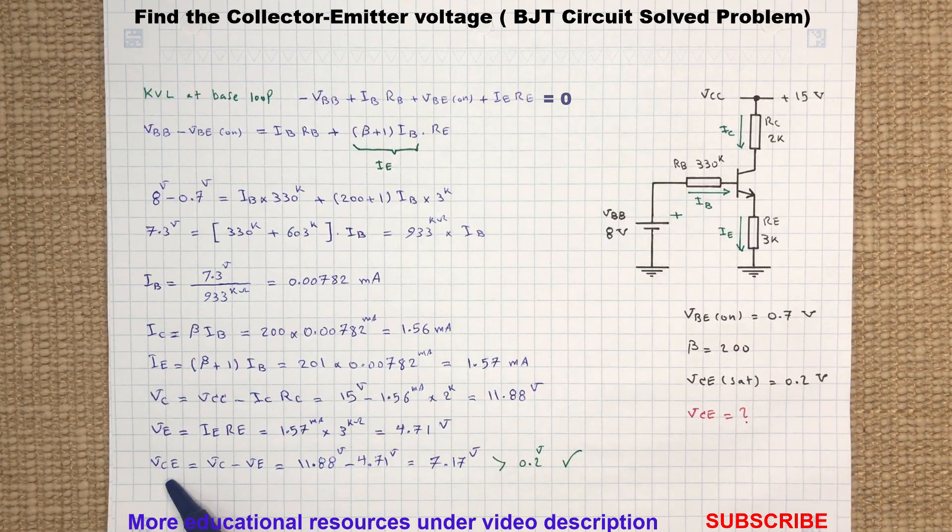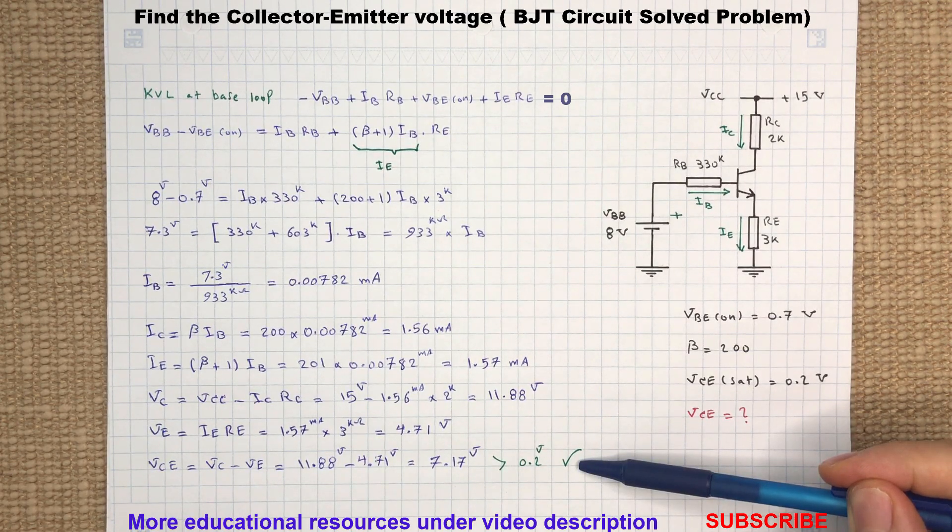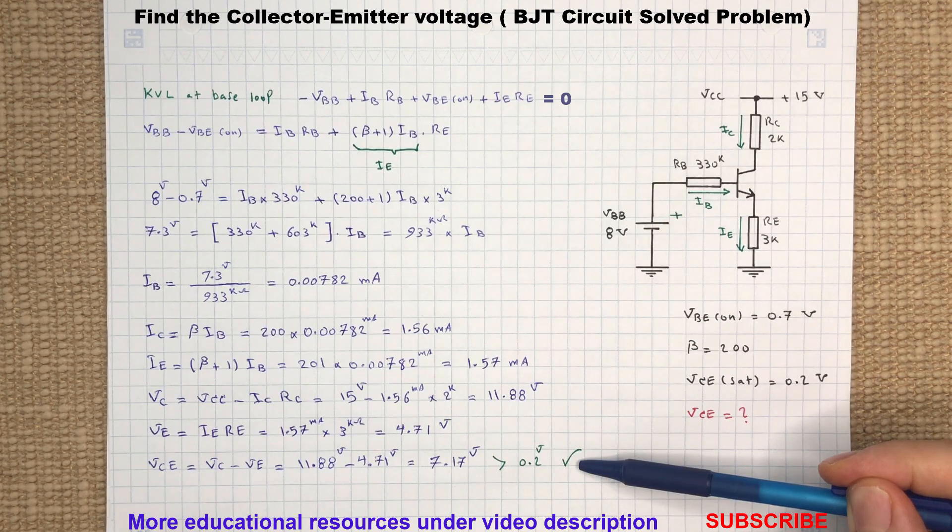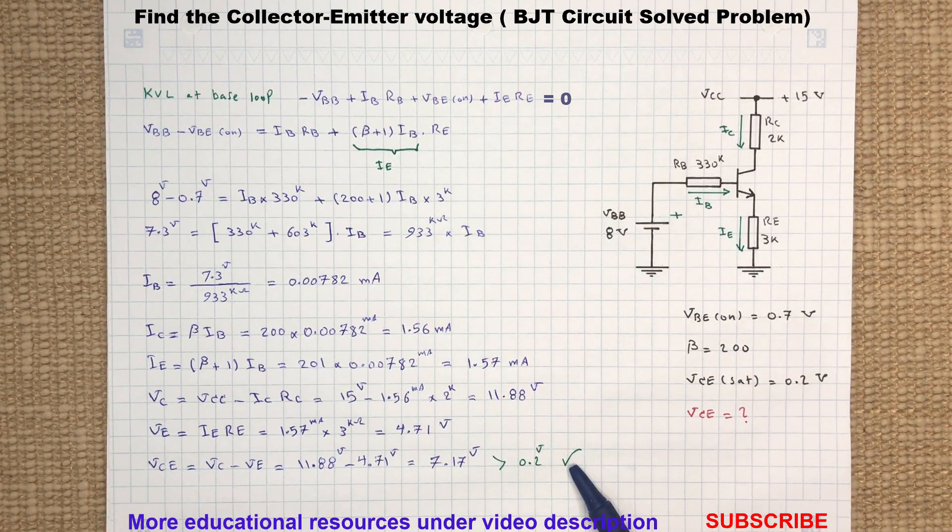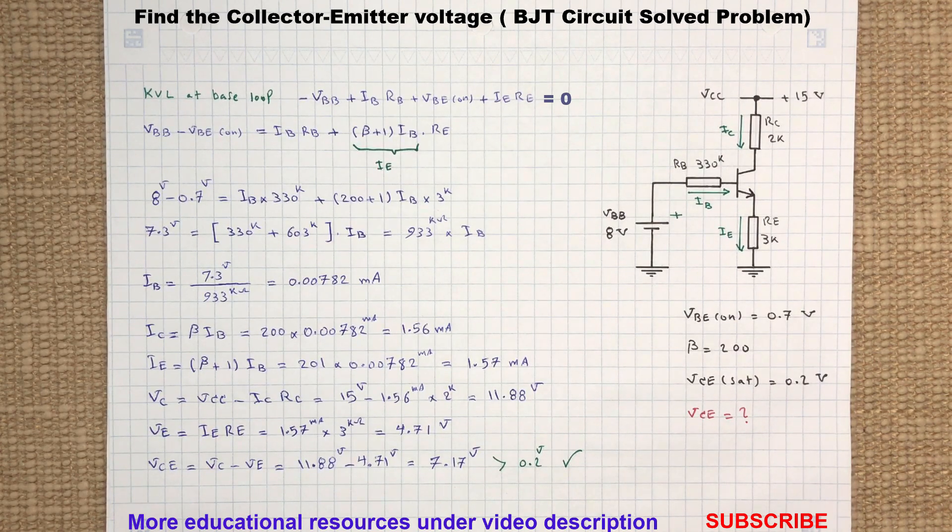As you can see here, this voltage is greater than 0.2 volt, the saturation voltage. Therefore, the transistor is in active region and we accept the result.